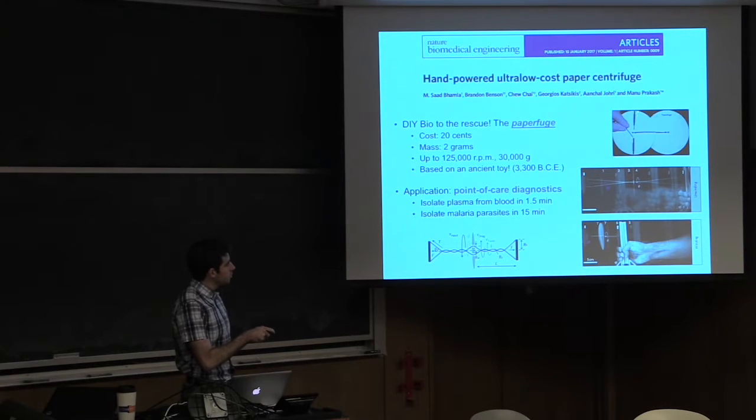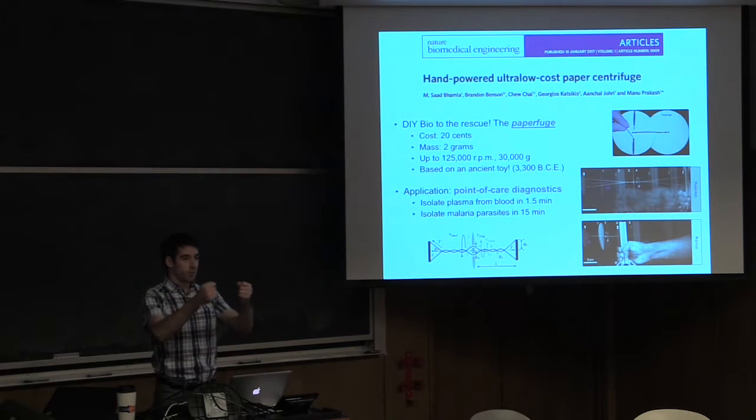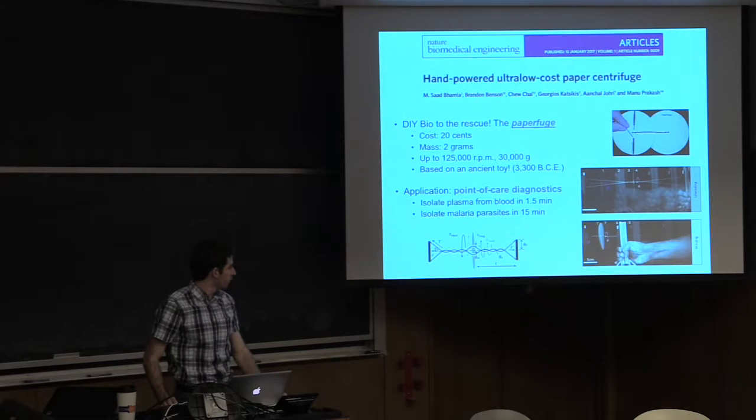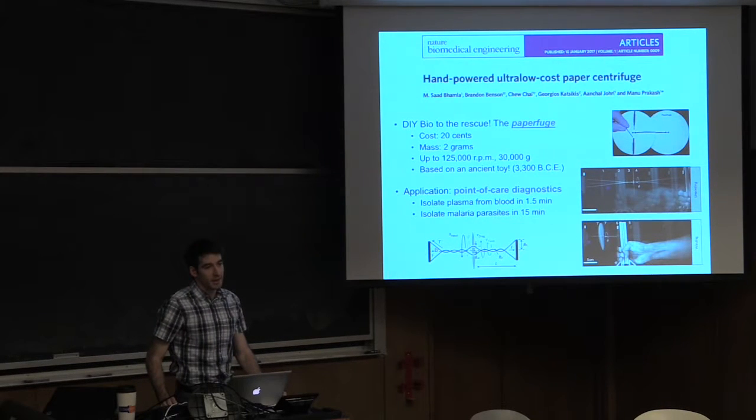Here are the tubes of blood samples. And what you do is you unwind and you wind it by essentially pulling the string and just pulling it back and forth. And the different circles fit. So they can isolate plasma from blood in 90 seconds. They can isolate malaria parasites in 15 minutes.